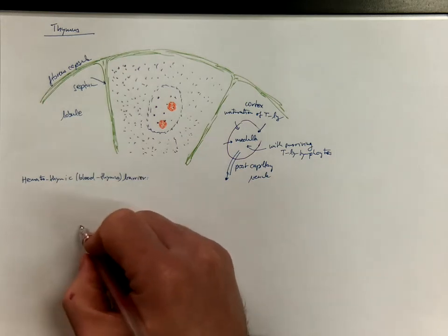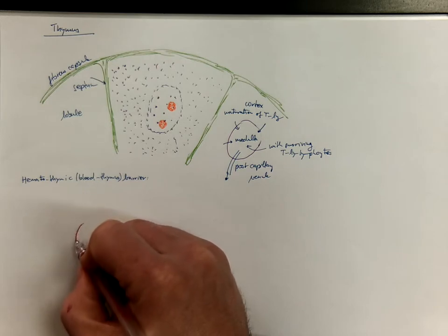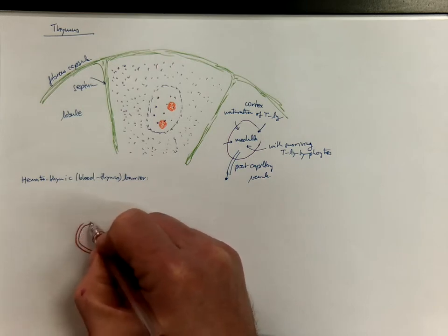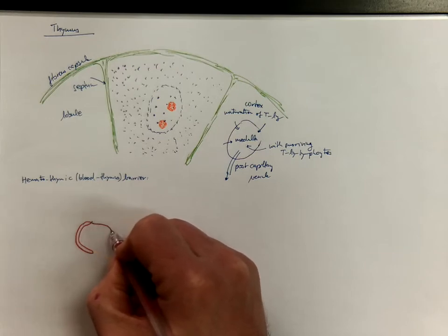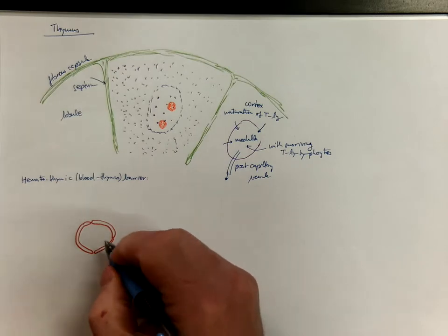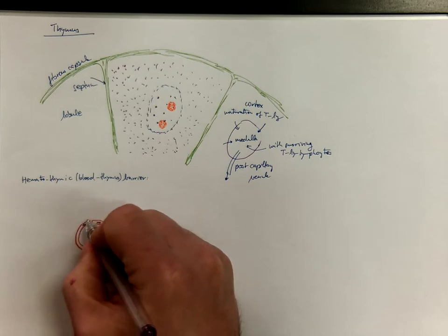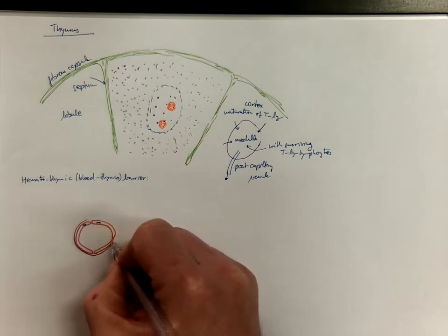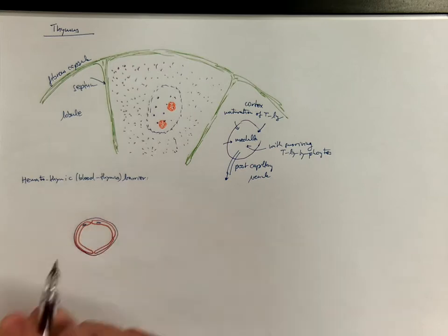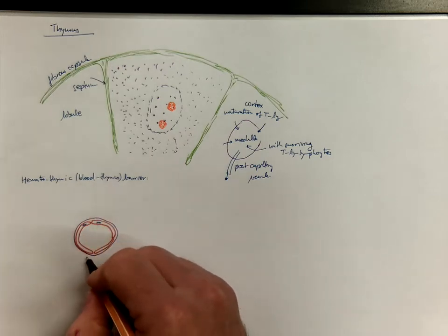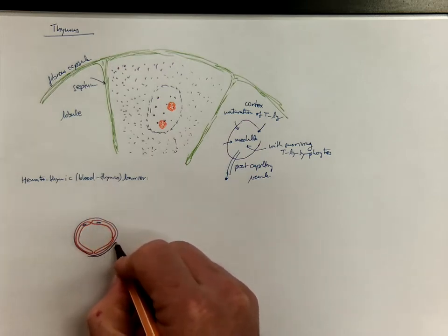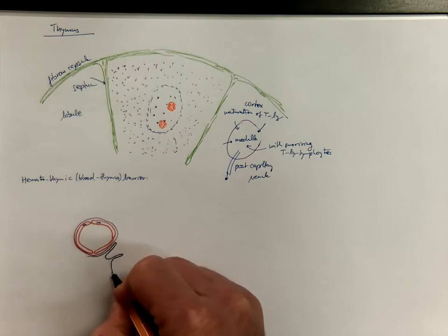The histological layers are as follows: First, the endothelial cells are connected with each other with tight junctions. Second, there is a continuous basal lamina of that capillary. Third, there are cell projections of the reticular cells that are surrounding the capillary.